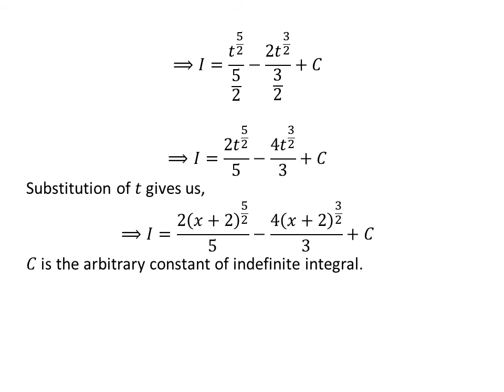Let us substitute t back in terms of x, since we had assumed t is equal to x plus 2. So i is equal to 2 times x plus 2 raised to the power of 5/2 upon 5 minus 4 times x plus 2 raised to the power of 3/2 upon 3 plus capital C.